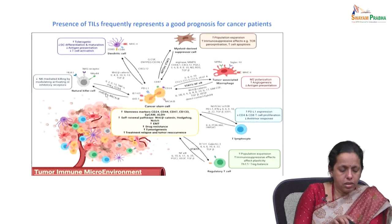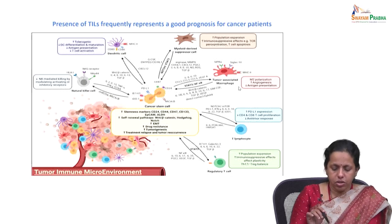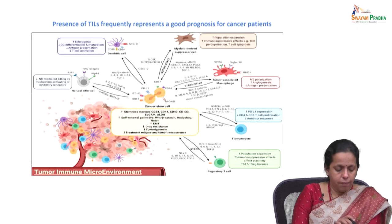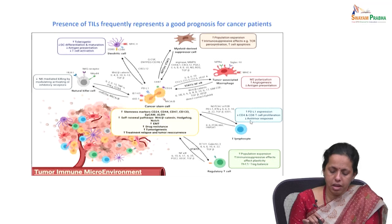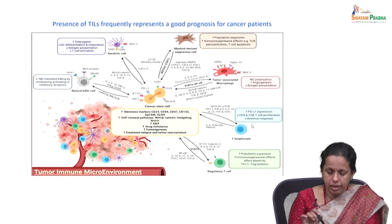The tumor microenvironment includes natural killer cells, dendritic cells, myeloid-derived suppressor cells, tumor-associated macrophages, T lymphocytes, and T regulatory cells. In T lymphocytes, there is increased PD-L1 expression, decreased CD4 and CD8 T cell proliferation, and therefore a decrease in anti-tumor response, further triggering cancer stem cell pathways.